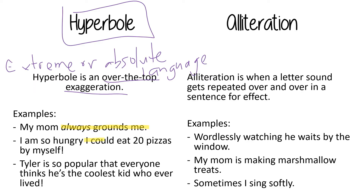Let's look at the next one: 'I am so hungry I could eat 20 pizzas by myself.' Again, it's an exaggeration — that extreme or absolute language. No one is going to eat 20 pizzas by themselves. You're being hyperbolic. But the author is trying to show how very hungry they are, and maybe also a little bit silly. The last one: 'Tyler is so popular that everyone thinks he's the coolest kid who ever lived.' The coolest kid who ever lived — that's pretty over-the-top. There have been a lot of kids, so it's hyperbole. All of these exaggerations are examples of hyperbole.